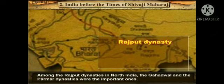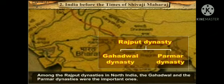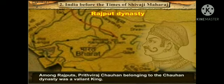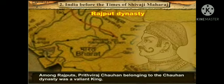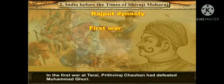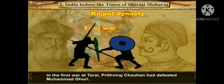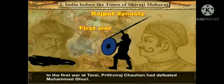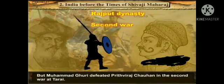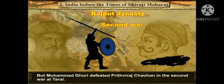Among the Rajput dynasties in North India, the Gahadwal and the Parmar dynasties were the important ones. Among Rajputs, Prithviraj Chauhan, belonging to the Chauhan dynasty, was a valiant king. Valiant means brave. In the First War of Tarai, Prithviraj Chauhan had defeated Mohammed Ghori. But Mohammed Ghori defeated Prithviraj Chauhan in the Second War at Tarai.